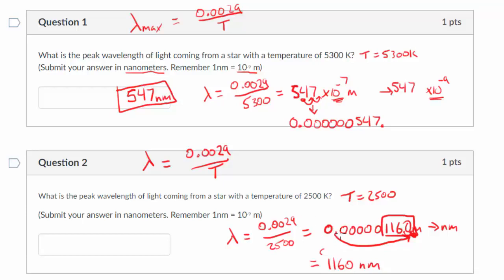So this is the same as saying 1160 nanometers. Again, because I moved the decimal nine places to the right. I hope that makes some sense. Although you're not putting the units, you're just putting the value.